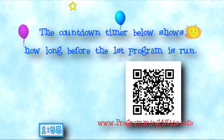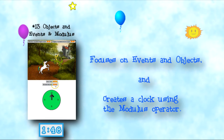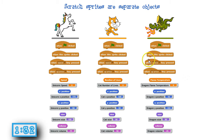The countdown timer at the bottom of the screen shows how long until a program is first run. This show number 13 focuses on events and objects and introduces the modulus operator by creating a clock. Scratch is arguably an object-based programming language. Each sprite and the stage have their own event handlers and can create their own procedure blocks, their own variables, and Scratch maintains several system variables for each sprite, including the XY locations, sprite size and costume number, and instrument volume.